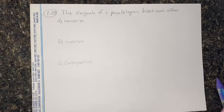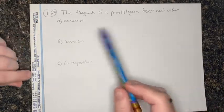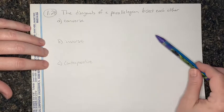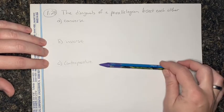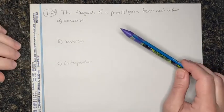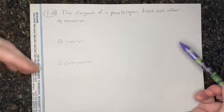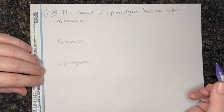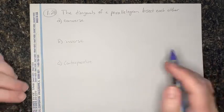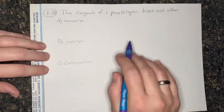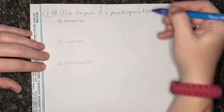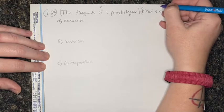The first problem I want to look at is problem 128, and it reads: the diagonals of a parallelogram bisect each other. What these problems want us to do is write the converse, the inverse, and the contrapositive of each statement. First thing we need to decide is what is our hypothesis and what is our conclusion — our P and our Q. So, the diagonals of a parallelogram is our P, and our Q is going to be the fact that they bisect each other.